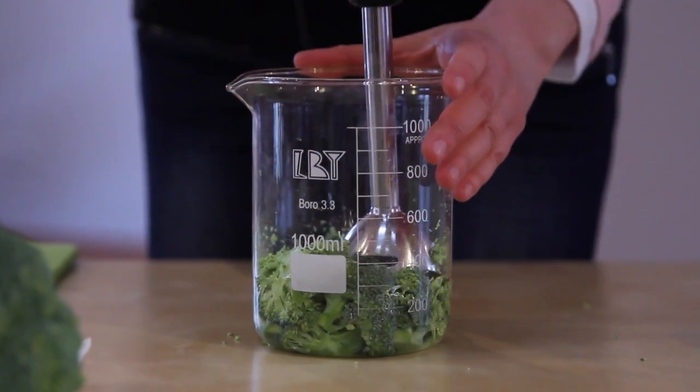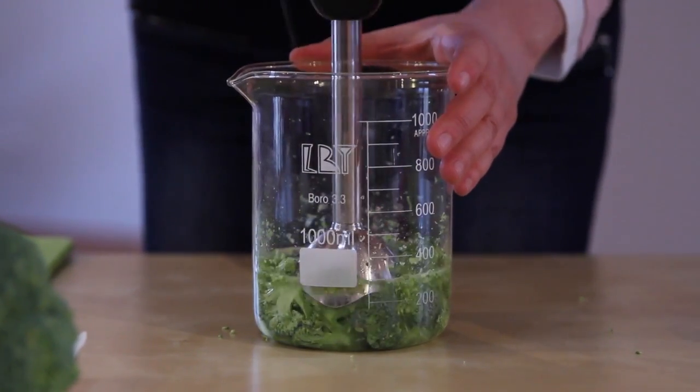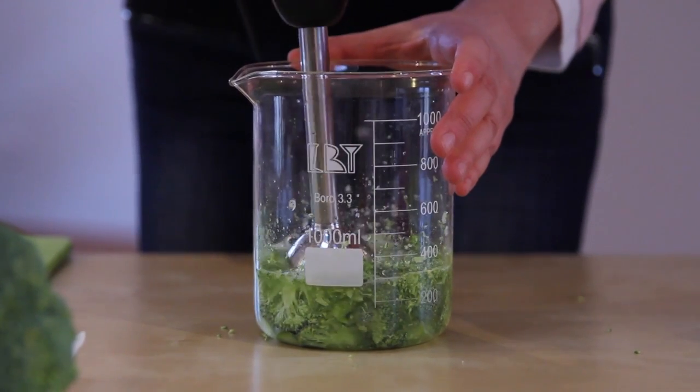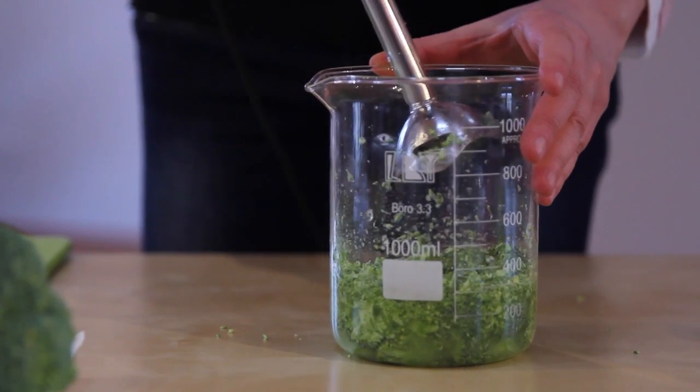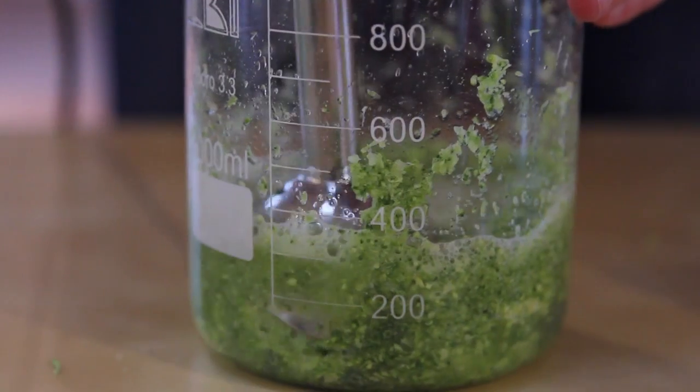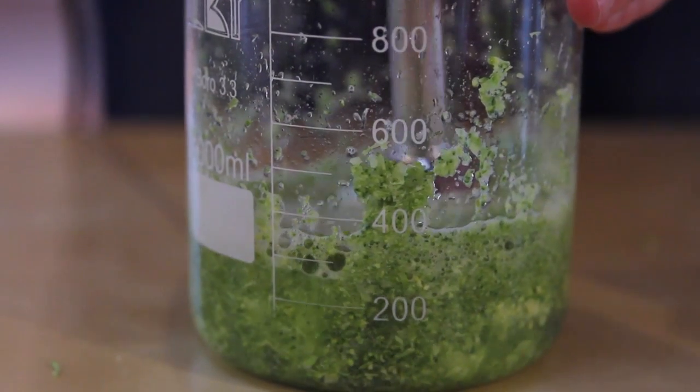Then you complete the process using a blender. You need to break the plant material down to an appropriate degree. After blending for a while, mix everything with a spoon in order to blend also those parts which are at the bottom, and then continue blending.